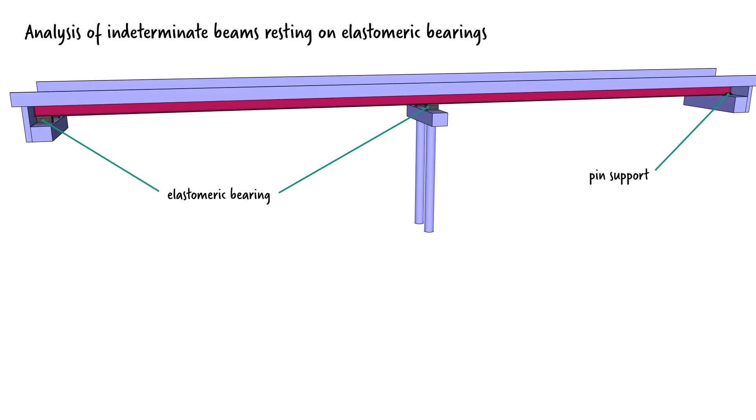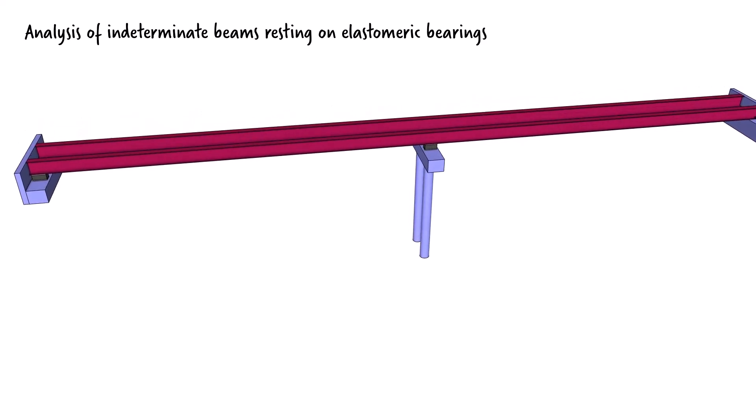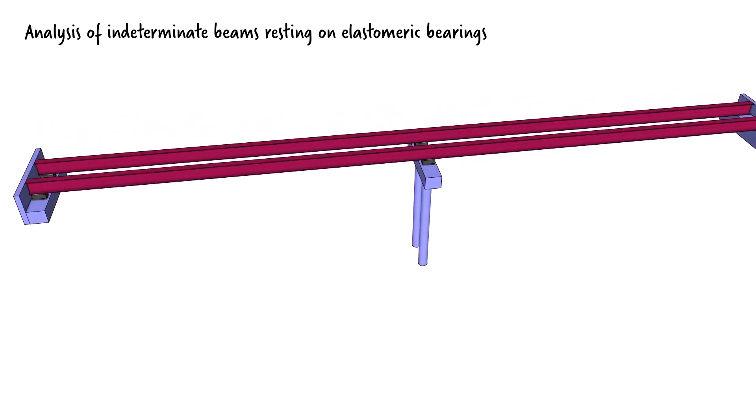Our objective is to determine the extent of these settlements and evaluate their effect on the bending moment distribution. The bridge superstructure rests on two identical I-shaped beams. For the purpose of this analysis, we will focus on one of these beams.